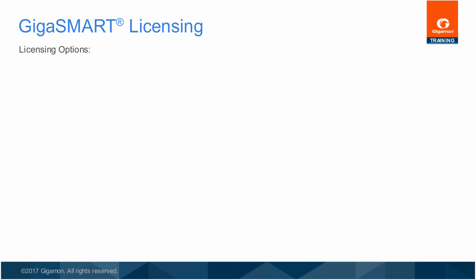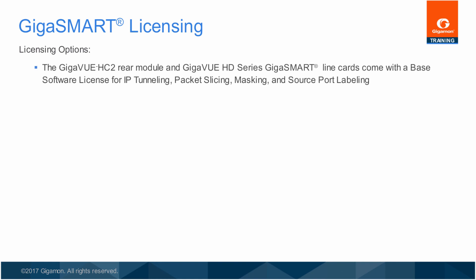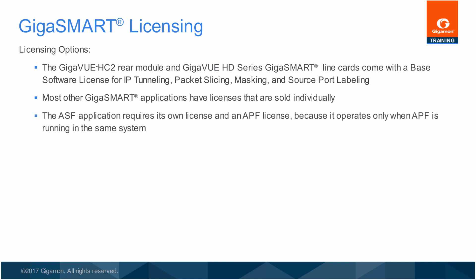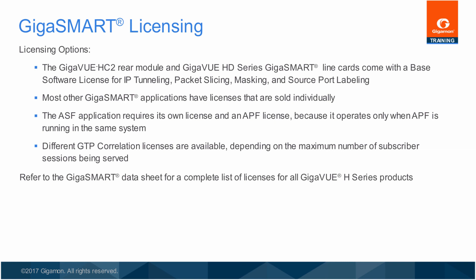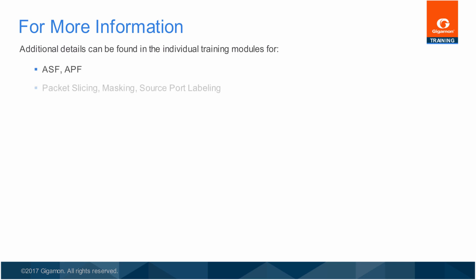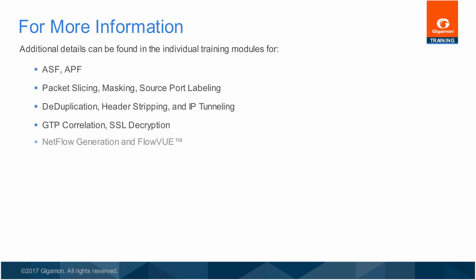To accurately quote GigaSmart products, you need to know the following information. The GigaView HC2 rear module and GigaView HD Series GigaSmart line cards come with a base software license for IP tunneling, packet slicing, masking, and source port labeling. Most other GigaSmart applications have licenses that are sold individually. The ASF application requires its own license and an APF license because it operates only when APF is running in the same system. Different GTP licenses are available depending on the maximum number of subscriber sessions being served. Refer to the GigaSmart data sheet for a complete list of licenses for all GigaView H-Series products. Additional details can be found in the individual training modules for each GigaSmart application, as well as the user guides.